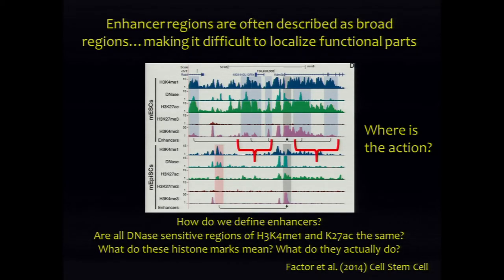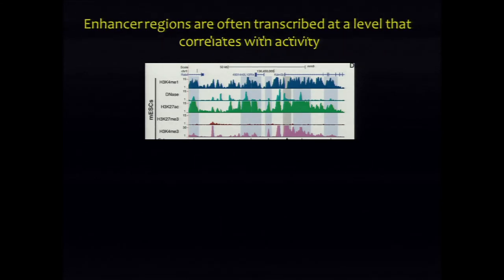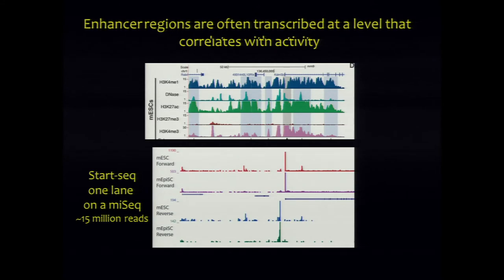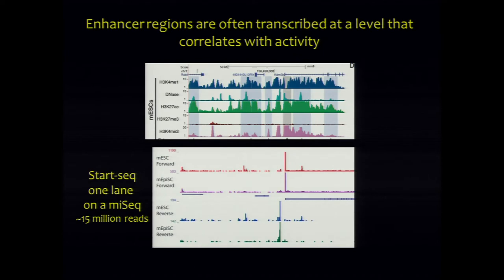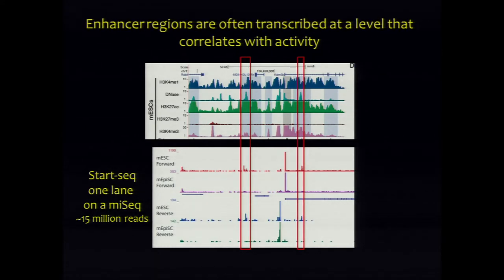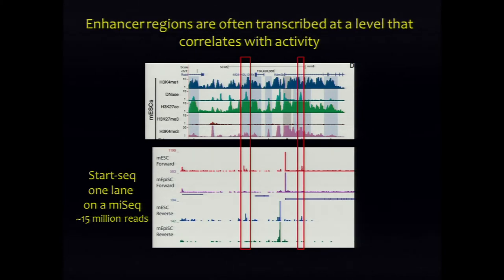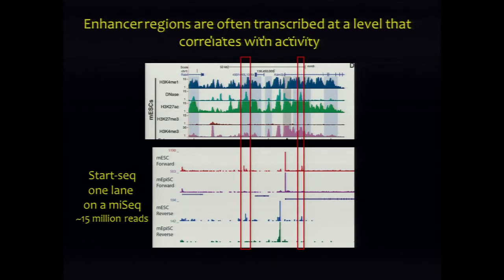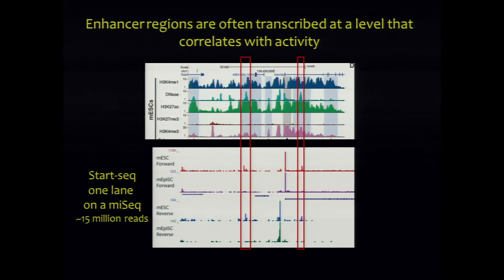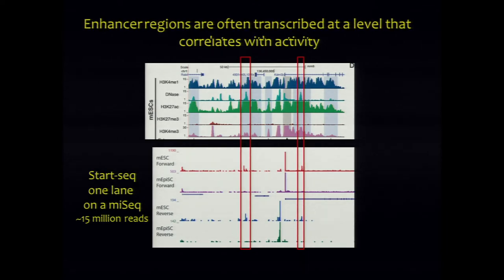In collaboration with Joanna Wysocka, we characterized the same ESC-to-epi-SC transition. This is preliminary data from one lane on a MiSeq of our START-seq. In mouse embryonic stem cells you can see both forward and reverse transcription within loci described as enhancers, and that transcription is totally gone in the epi-SCs. The alignment of these reads beautifully co-localizes with the DNase signal, telling us there's a focal region within these enhancers — transcription and DNase are pinpointing the same specific region within a multi-kilobase locus.